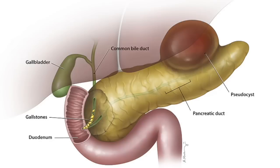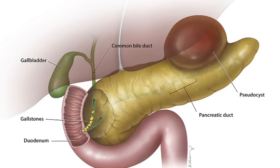Pancreatitis ka ek alag video bhi hai. Chronic pancreatitis mein bhi kabhi kabhi ban sakti hai — lambe samay tak agar pancreas mein inflammation ho raha ho. Ya pancreas mein ya pait mein chot lagi ho — kisi ko bhi, kisi bhi kaaran — toh bhi pseudocyst ho sakti hai.